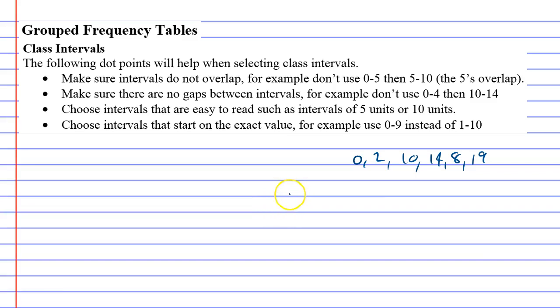When we're talking about class intervals, we're saying we could say something such as which numbers are between 0 to 4, the class interval 0 to 4, and then what numbers are between 5 to 9, what numbers are from 10 to 14, and what numbers are from 15 to 19.